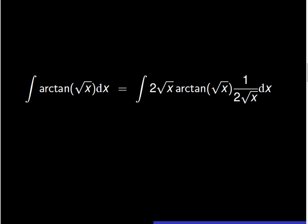The integral of arctangent of square root of x dx can be expressed as the integral of 2 times square root of x, times arctangent of square root of x, times the fraction 1 over the quantity 2 times square root of x dx. We can clearly see u and du in the expression of the integral. So we replace square root of x by u, and the fraction 1 over the quantity 2 times square root of x dx by du. We then obtain the new expression of this integral as the integral of 2u times arctangent of u du.